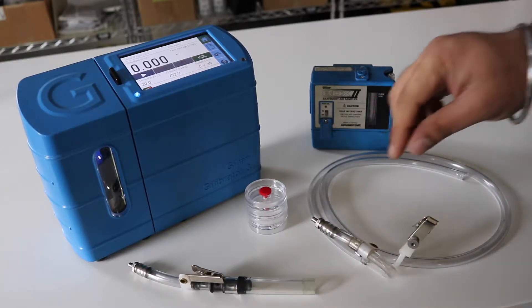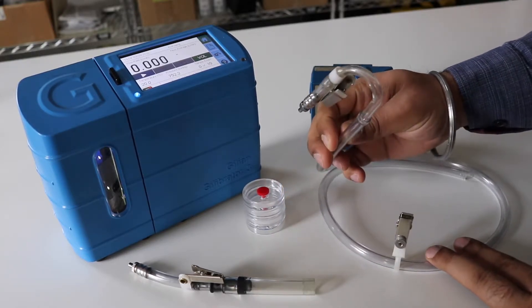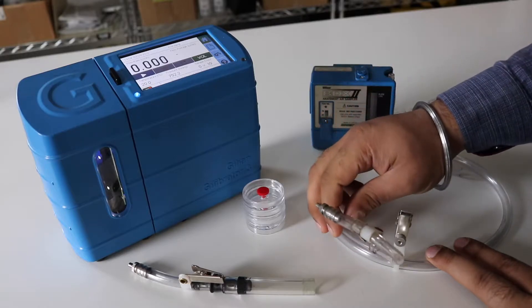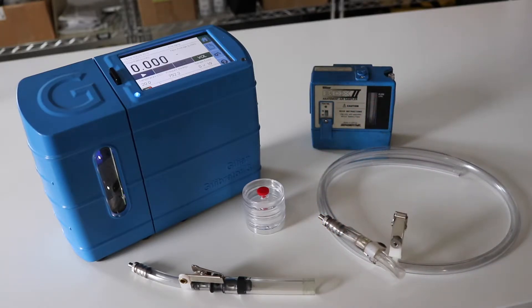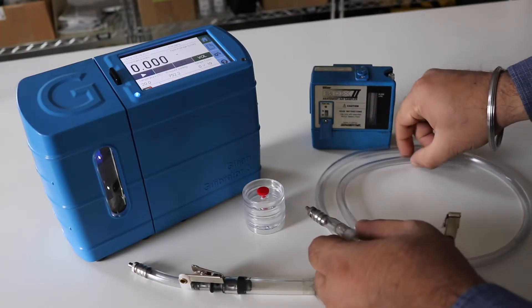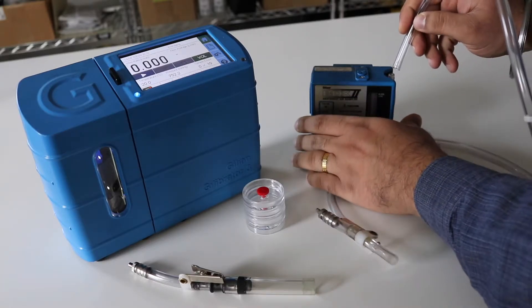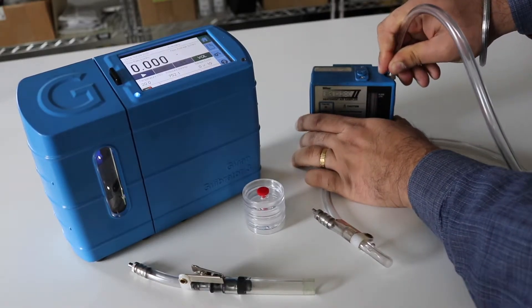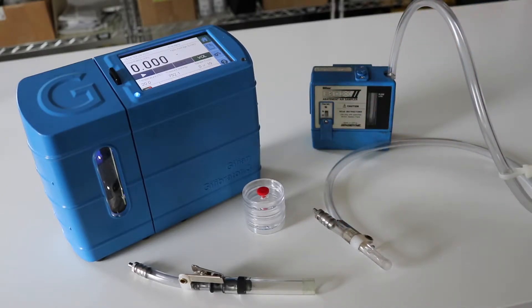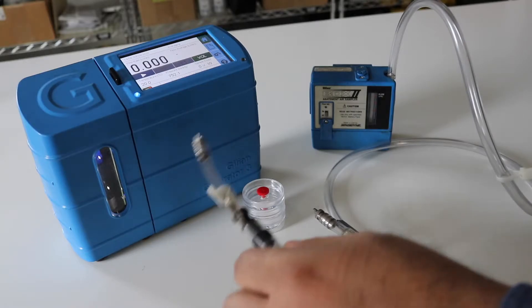Slide in any collar clips and insert the lower adapter to the connecting tubes. Insert one end of the flexible tube to the sampling pump. Insert another flexible tube to the Gillian Gilibrator 3 calibrator.